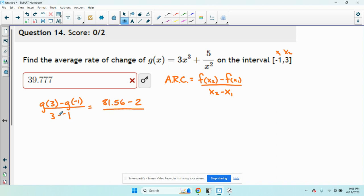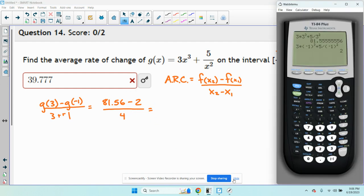All over 3 minus negative 1, that's going to give me 3 plus 1, that's 4. I get 81.5555 minus 2 on top, and then that divided by 4.